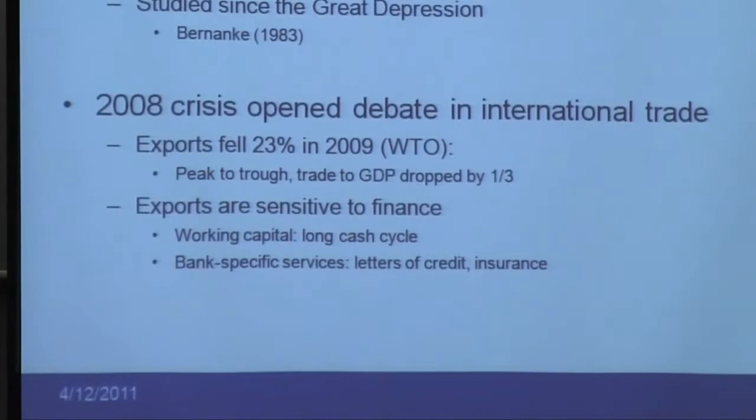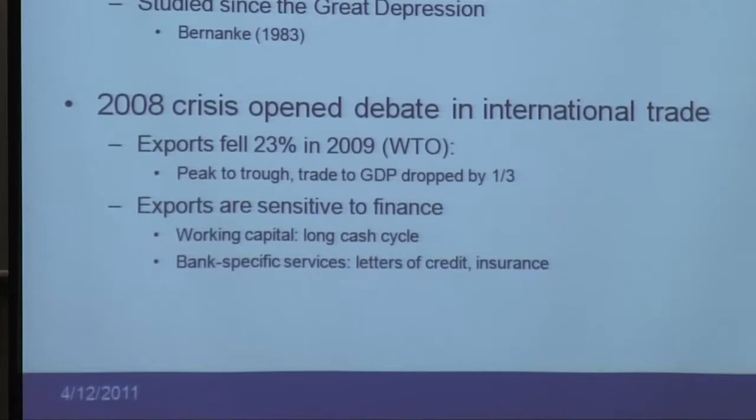During 2009 alone, exports fell 23%. That decline was disproportionate compared to the decline in global GDP during the same period. This led people to ask to which degree did finance have to do with this disproportionate effect, or whether the availability of finance to exporters caused this amplified reaction. There are reasons to think there's a connection: exporters are heavy users of working capital, their cash cycles are simply longer than for firms selling domestically, and exporters make heavy use of bank-specific services like letters of credit and insurance, especially new exporters.